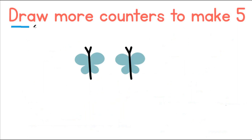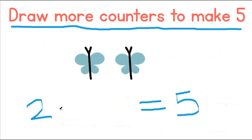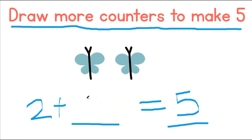Add more counters to make 5. Here we have 2, and we need to have 5. How many more counters do we need to add? 2 plus what number gives us 5? 1, 2, 3, 4, 5. Great job!